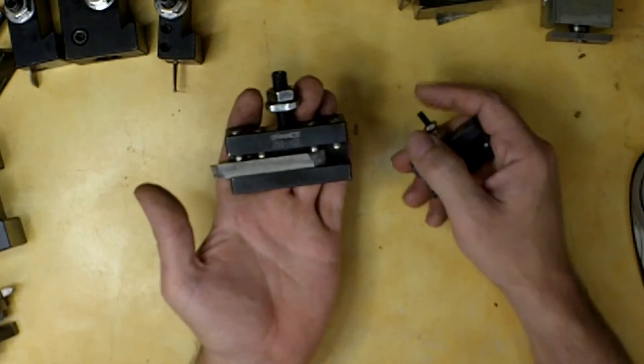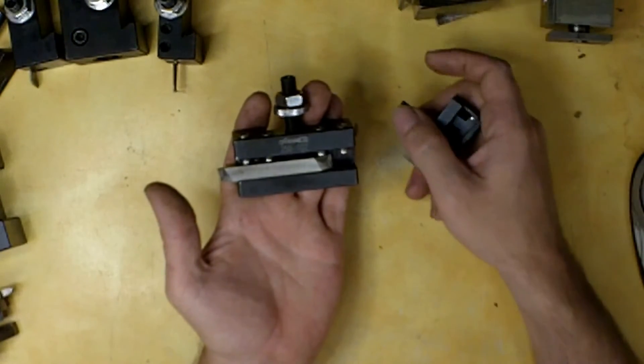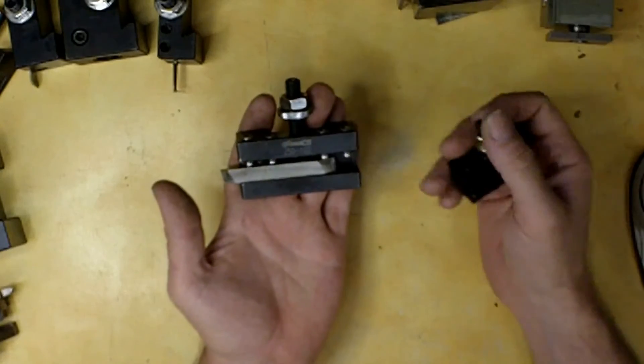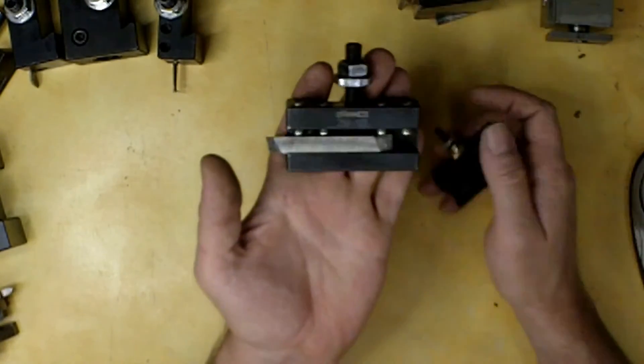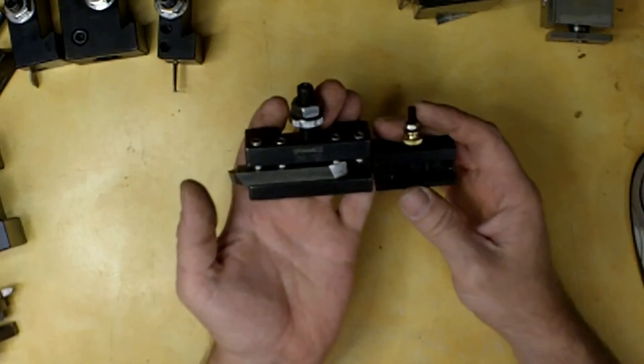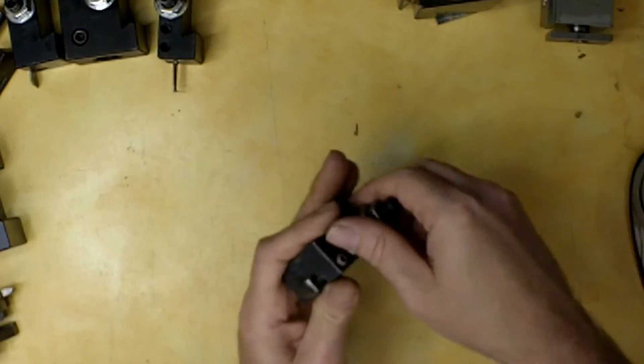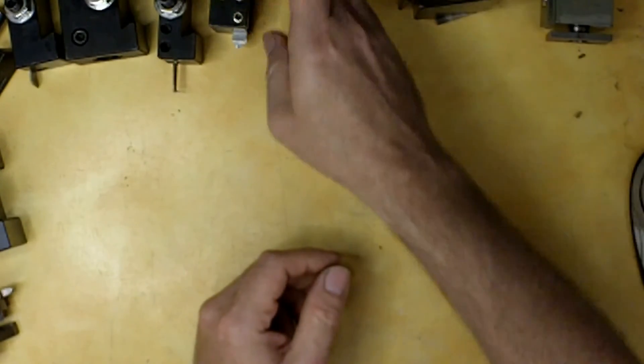This nine inch tool post, the one from my nine inch lathe, I think it fits actually up to a 12 inch. And then you get into larger tool blocks and tool holders for larger lathes. I mean, to the point where you got to use both hands to load them up. So that's kind of the rundown on those.